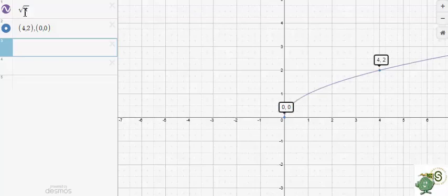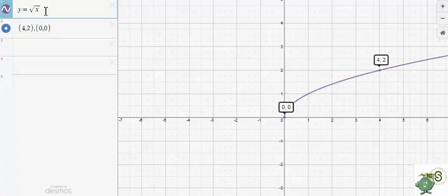Here I've graphed the function y equals the square root of x, and just for reference, I plotted a couple points, (4,2) and (0,0).